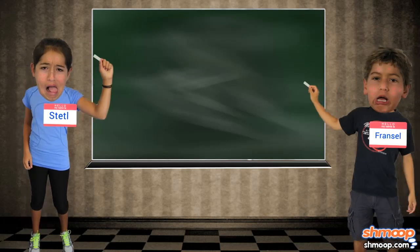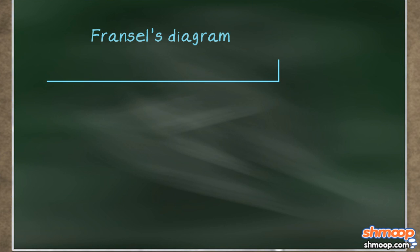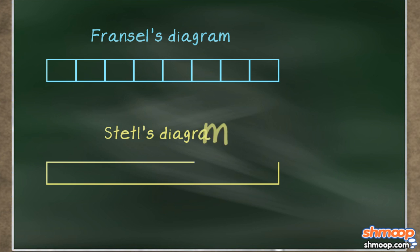As soon as Francil and Shtetl got home, they created the following strip diagram. As you can see, Francil's diagram is divided into eight rectangles, while Shtetl's was divided into six rectangles.